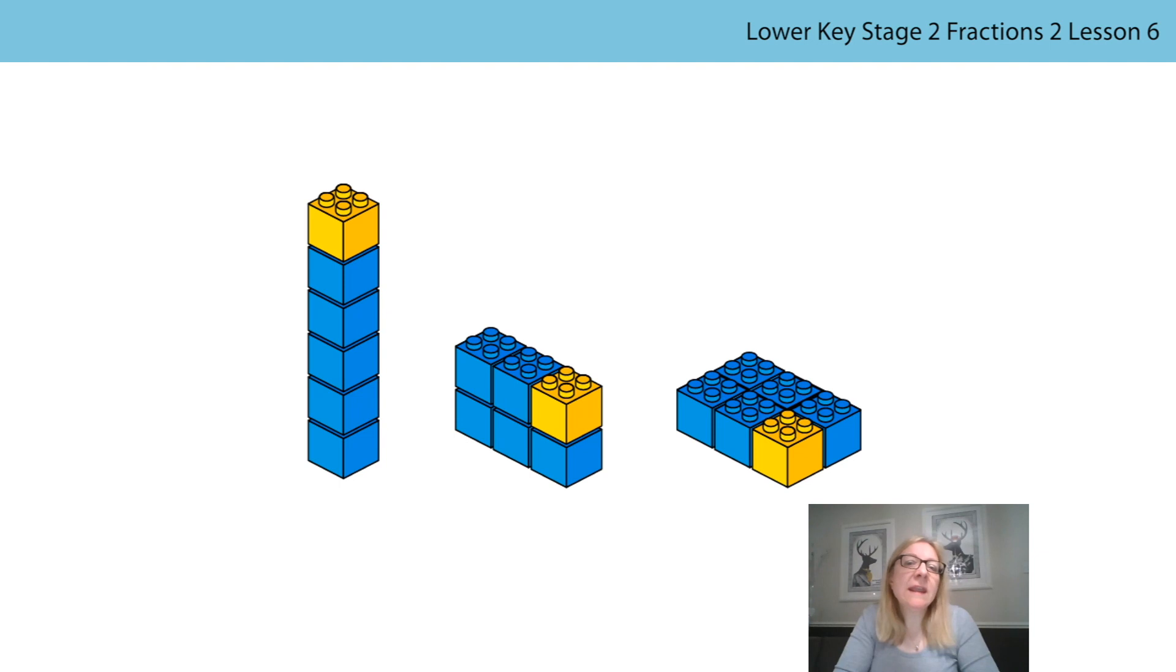When we're thinking about what is different, you may have said that the bricks have been laid out differently, that they're not all in towers, or that the one yellow brick is in a different position in each of the three models. This made me think back to the last lesson, where we learnt that if any equal part is highlighted, then it represents the same fraction.